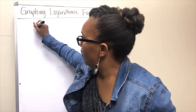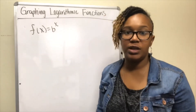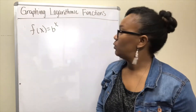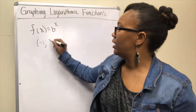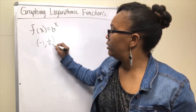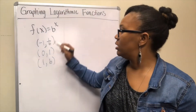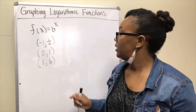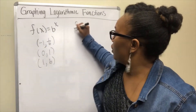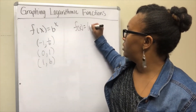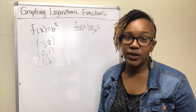There were three points that were always on your exponential function. For the general exponential function f(x) = b^x, those three points are: (-1, 1/b), (0, 1), and (1, b). When you plug in -1 you get 1/b, when you plug in 0 you get 1, and when you plug in 1 you get b.